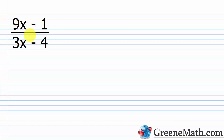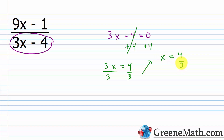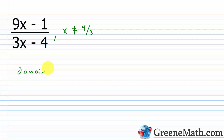Let's look at another example. We have (9x − 1) over (3x − 4). Again, to find the restricted values, we take the denominator and set it equal to 0. So we solve 3x − 4 = 0. Add 4 to each side, giving 3x = 4. Divide both sides by 3 and we get x = 4/3. So we write x does not equal 4/3, or in domain notation: the domain is the set of all elements x such that x does not equal 4/3.